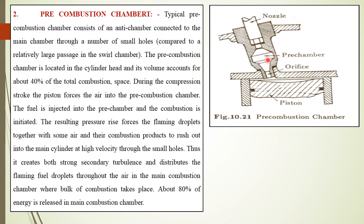This additional chamber known as a pre-chamber is provided in the cylinder head and is connected with the main chamber. The pre-chamber is connected to the main chamber through a number of small holes or orifices. Compared to the relatively larger passage in the swirl chamber, where a restricted passage connects tangentially with the main chamber, in this case there are a number of holes providing a larger passage between the pre-chamber and main combustion chamber.